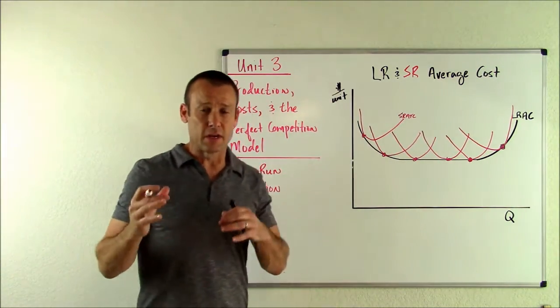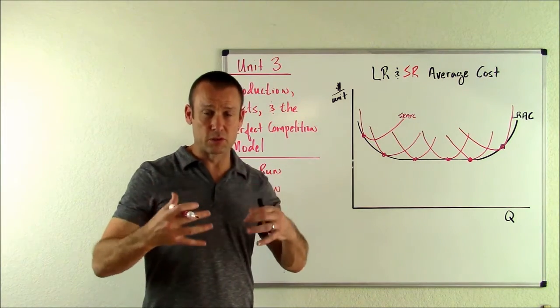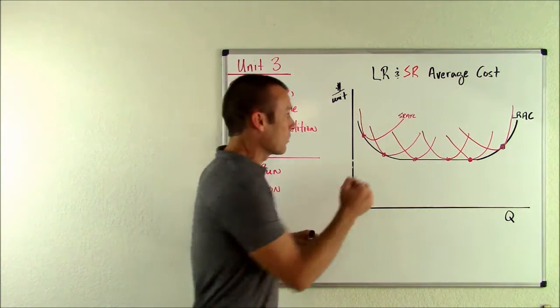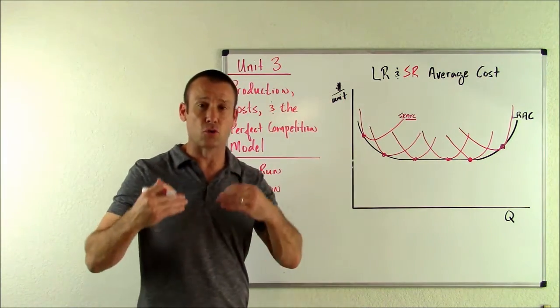are short run average total cost curves. I want you to know, in a lot of the videos when we're talking about production costs, we're always assuming that we are producing in the short run. So I don't always put in SR in front of it. You're used to just seeing average total cost.